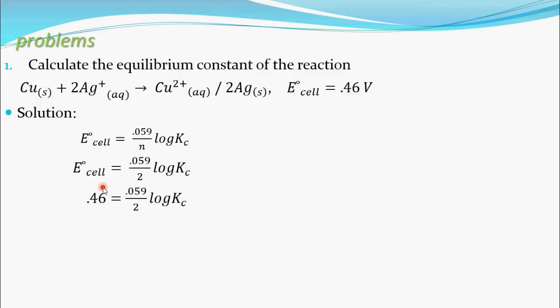Substitute that 0.46. Now, if you take this two to this side, it will get multiplied and if you take this 0.059 to this side, it will get divided. So, log Kc equals 2 into 0.46 by 0.059. When you simplify this one, you will get 15.6.